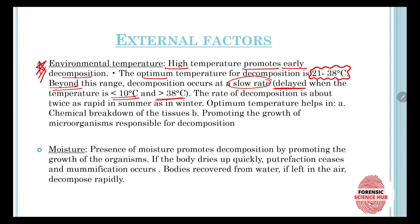The rate of decomposition is about twice as rapid in summers as in winters, since high temperature promotes early decomposition. The optimum temperature helps in two ways: first, the chemical breakdown of tissue, and second, promoting the growth of microorganisms responsible for decomposition.